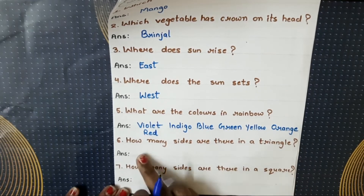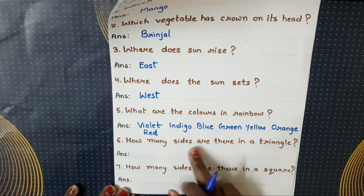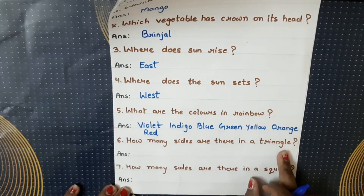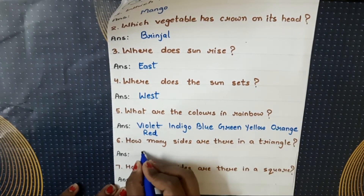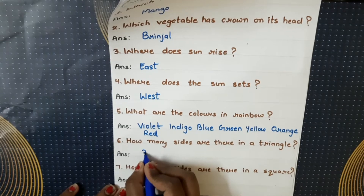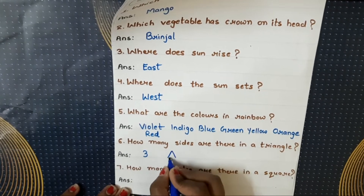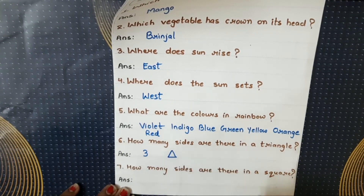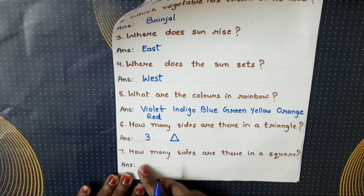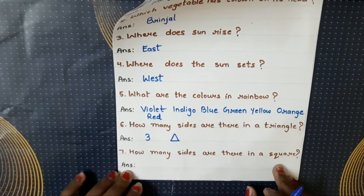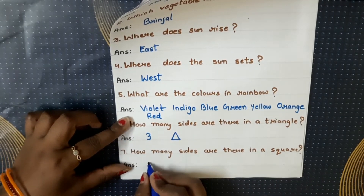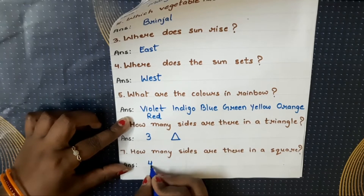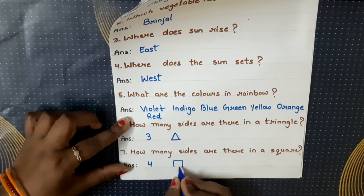Next question: how many sides are there in a triangle? Triangle mein kitni sides hoti hain? There are three sides in a triangle. Next question: how many sides are there in a square? Square mein kitni sides hoti hain? There are four sides in a square.